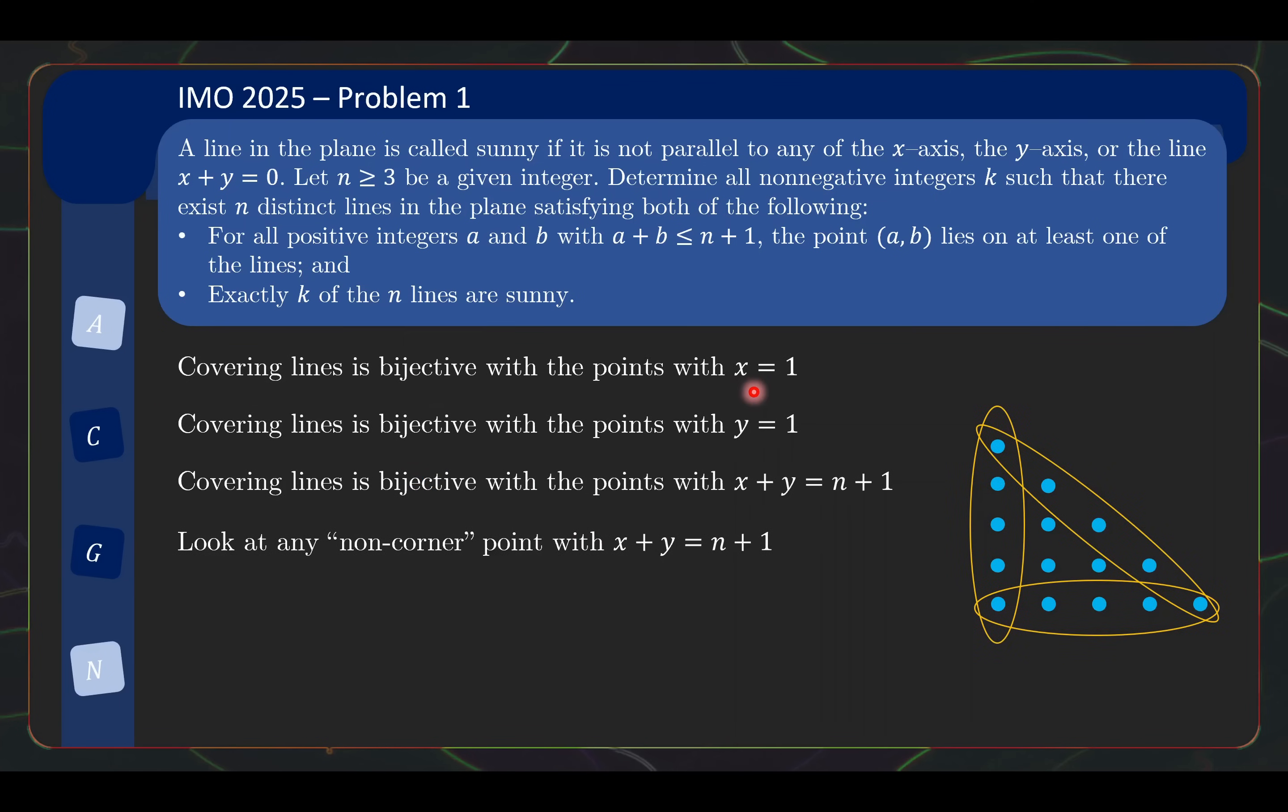Exactly one line passes through each of these points. Moreover, the lines are distinct. Okay, that's very good. We can repeat the same argument for the y equals to 1 points and so on.